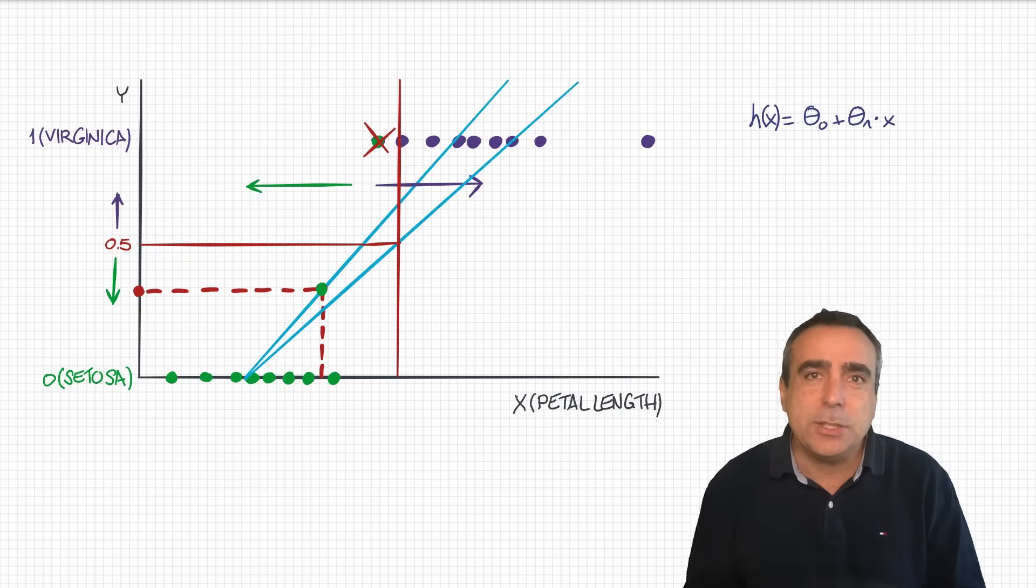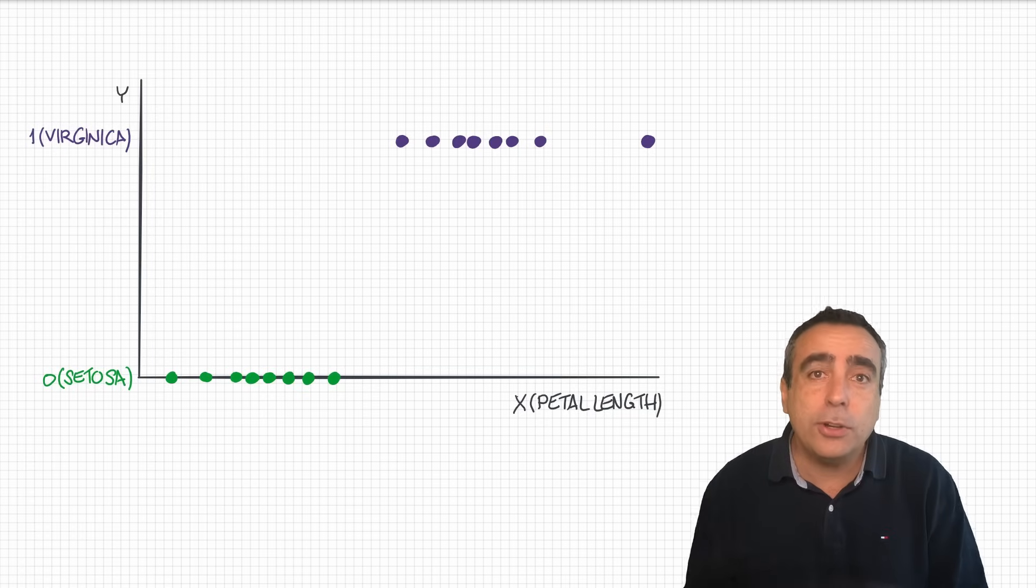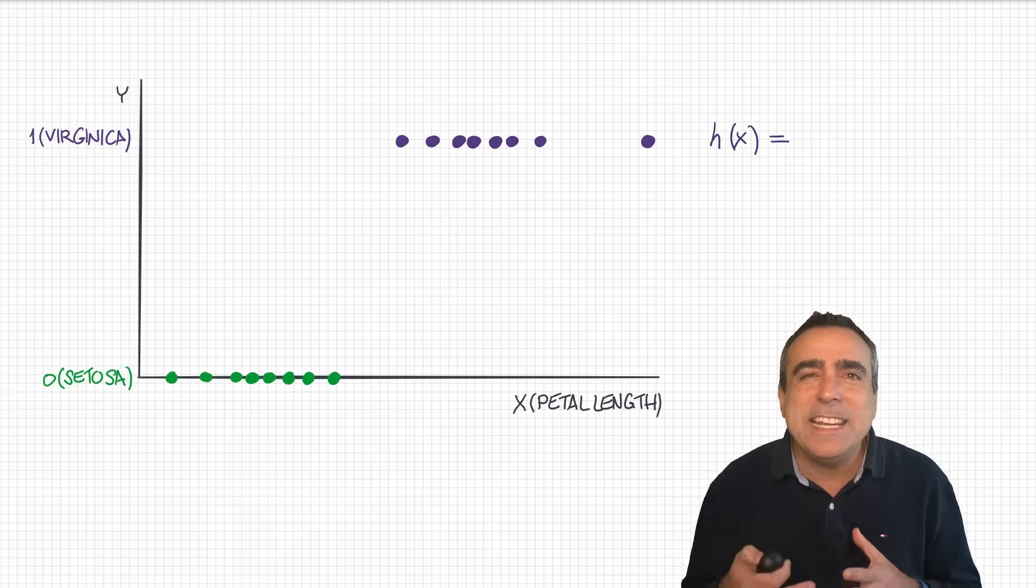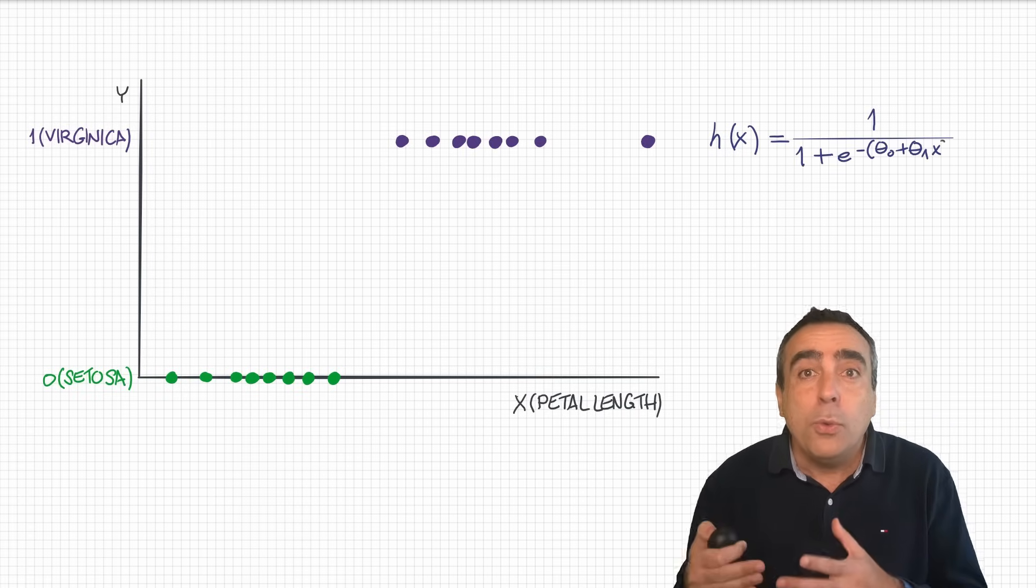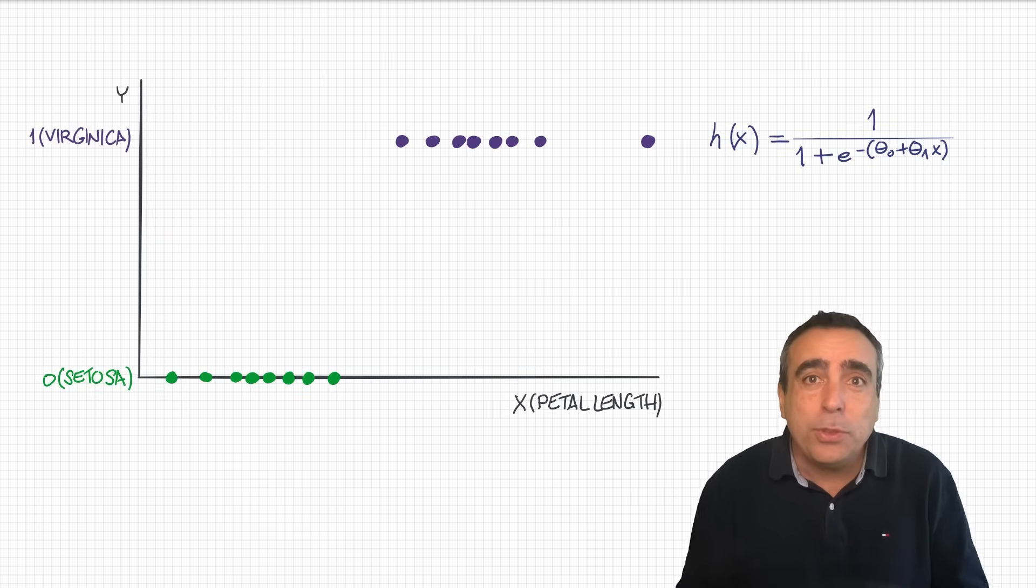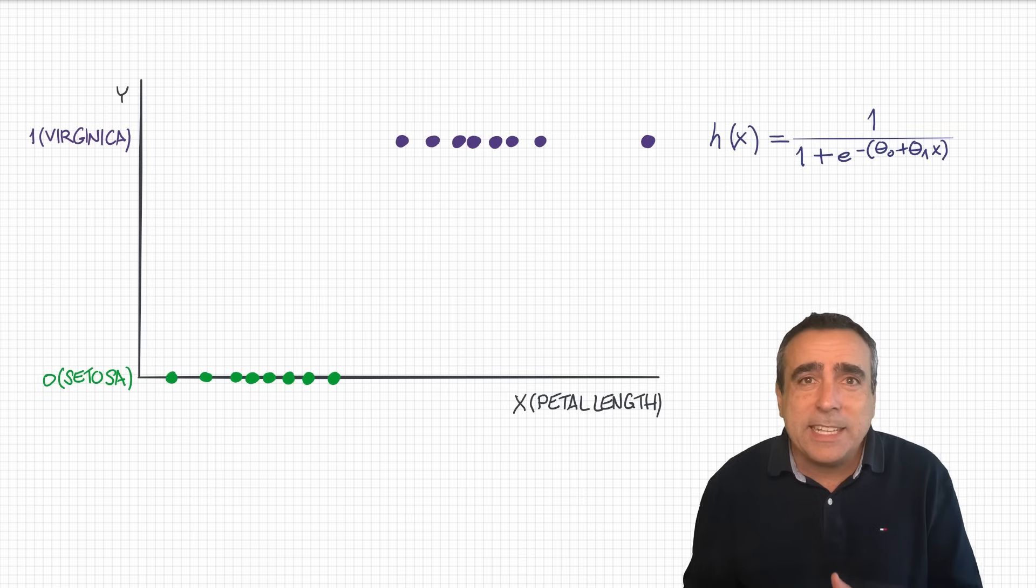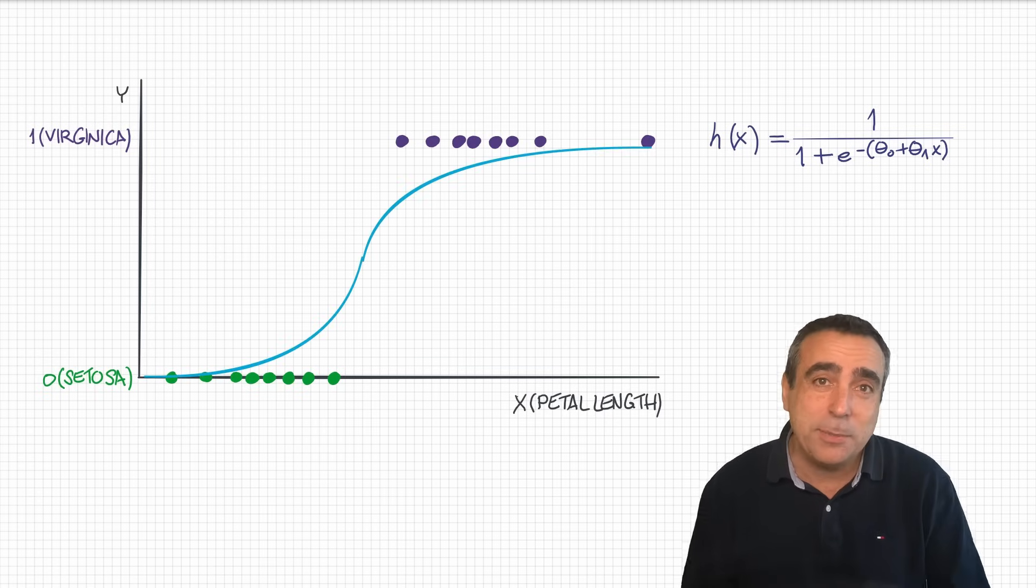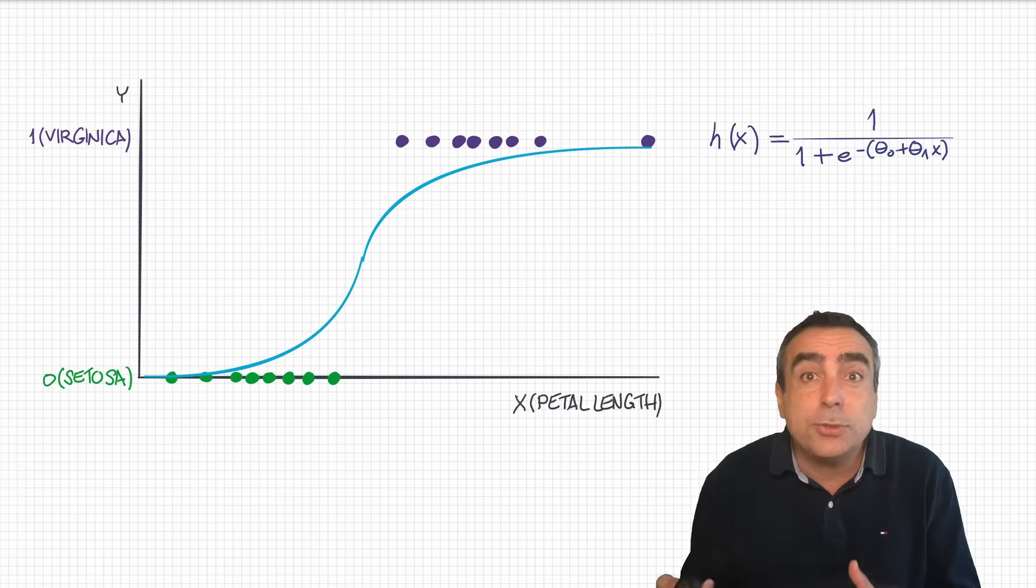We're going to use a different h of x. Instead of a line, we're going to use an expression called sigmoid function or logistic function. The equation for this function is a little bit more complicated, but it's going to be worth it, I promise. It's 1 over 1 plus the number e to the power of minus the same equation that we had before. So, theta 0 plus theta 1x. The cool thing of this equation is that it's going to look like an s. That's why it's called a sigmoid. It fits the dots in my chart much better than the line that I used before. And it works better for extreme cases, because you see that it flattens over time.